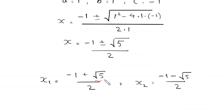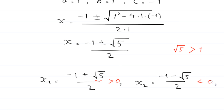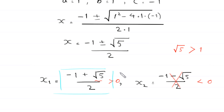So the two values are x₁ equals (negative 1 plus root 5) over 2, and x₂ equals (negative 1 minus root 5) over 2. Since root 5 is greater than 1, x₁ is positive (greater than 0) and x₂ is negative (less than 0). According to the domain of the equation, expressions under the square roots cannot be negative, so x₂ is rejected. Therefore the only valid solution is x equals (negative 1 plus root 5) over 2.